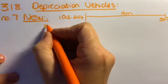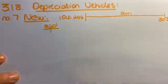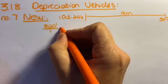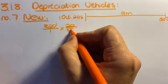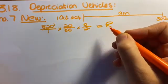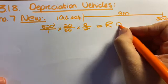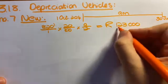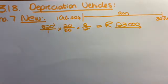Take your 820, which is the cost price. It's an easy one. There's no diminishing method. So you times by the 20% and you times by your nine months. And your depreciation for your new vehicle is 123,000. That's the first part of your question.